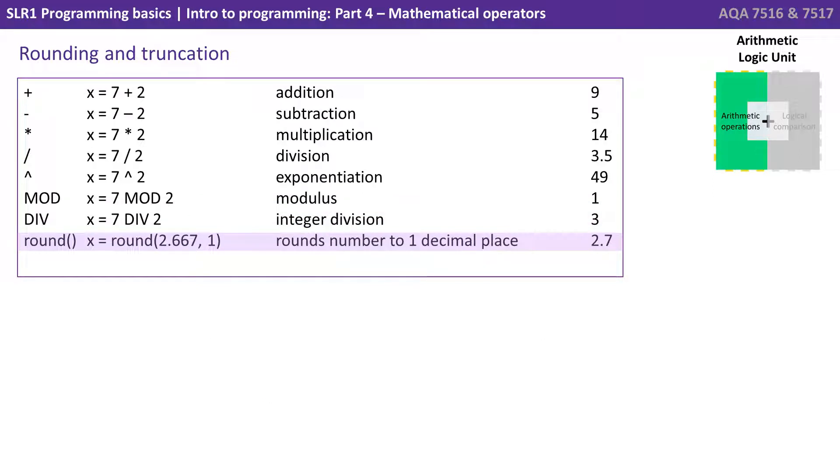Next we have round, so that rounds numbers to 1 decimal place, or to a number of decimal places you specify. So in our example, x equals round 2.667 comma 1 rounds the number up to 2.7. And finally we have trunc which is short for truncation. This simply chops the number off at the number of decimal places, it doesn't do rounding. So x equals trunc 2.667 comma 1 truncates it to 2.6.